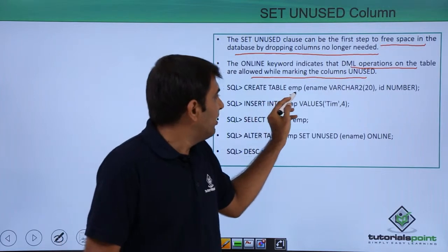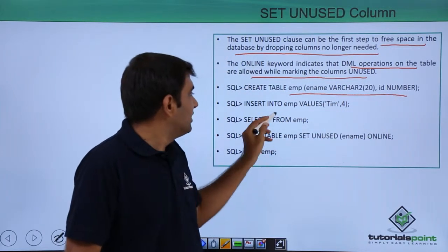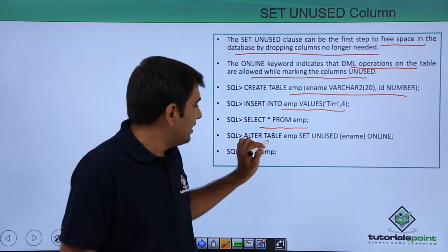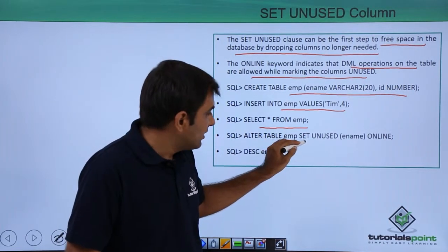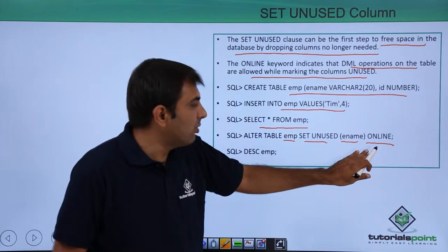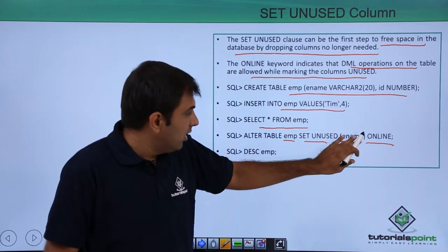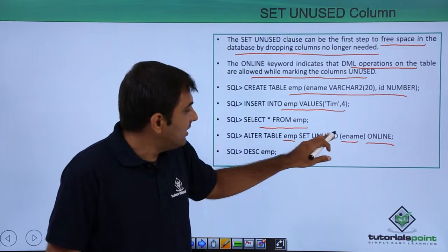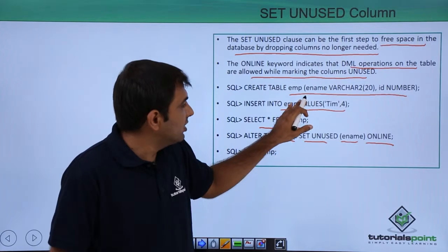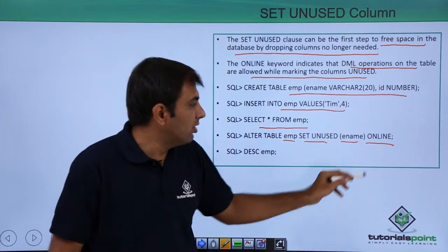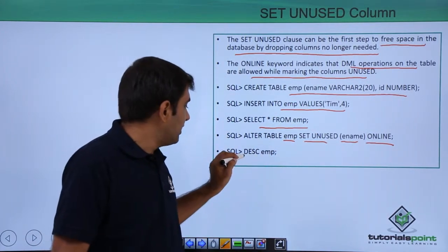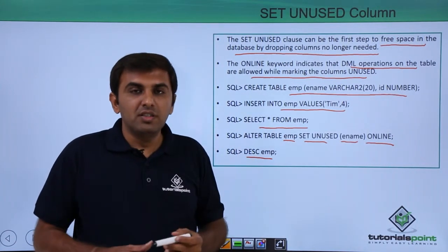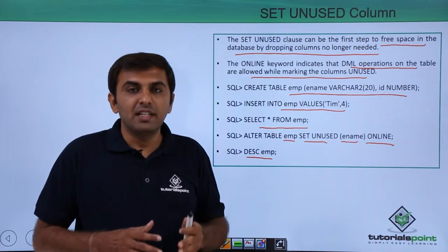For example: CREATE TABLE, insert values, then SELECT * FROM EMP. Then issue ALTER TABLE EMP SET UNUSED ename ONLINE. Whenever you perform this activity online, any DML operations on the table are not going to be affected. After that you can check with DESC EMP. In this session we have discussed the enhanced DDL capability.